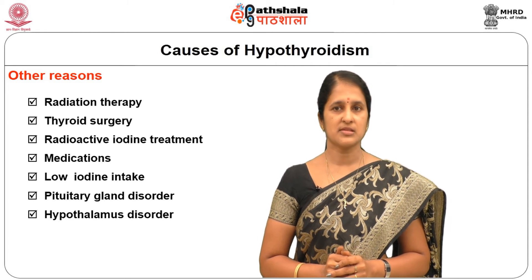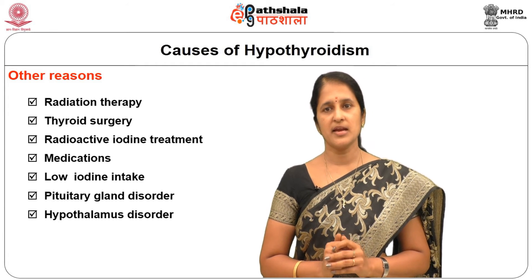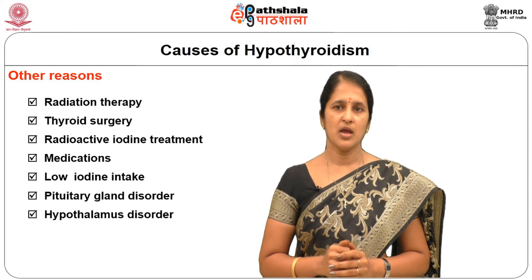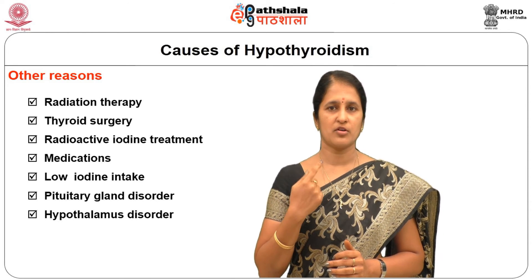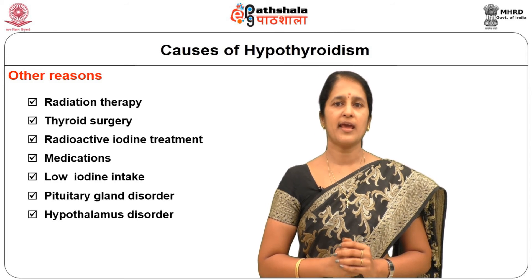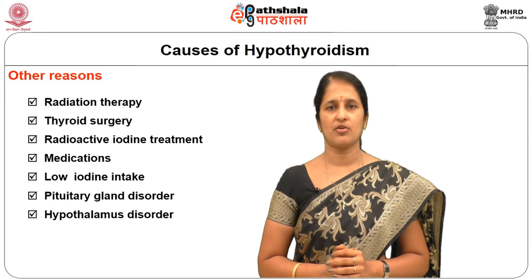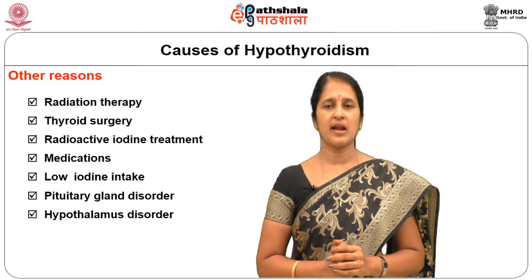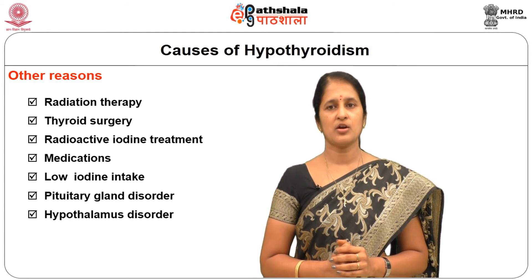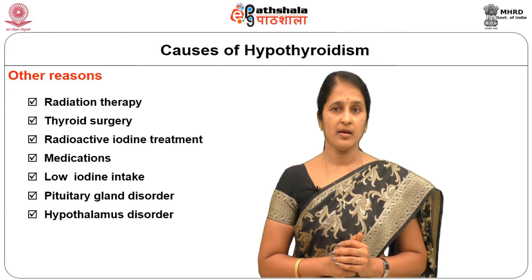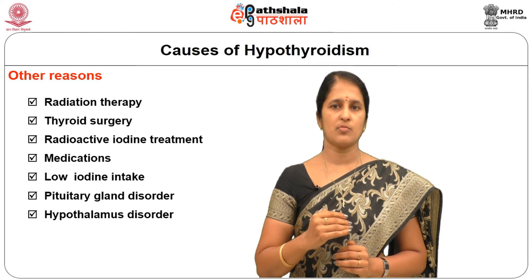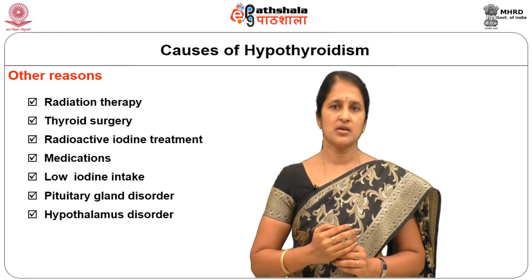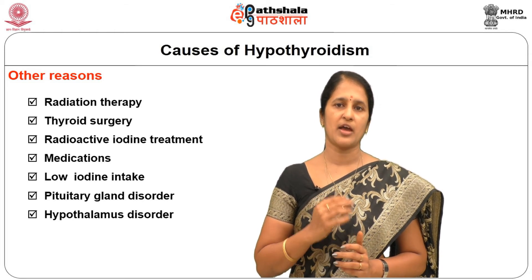For proper synthesis of thyroid hormone, iodine is needed sufficiently. Unfortunately, iodine is not produced in the body and must be taken through food sources. A good source of iodine is iodine-fortified salt. Low intake of dietary iodine also leads to hypothyroidism. Hypothyroidism due to pituitary gland disorder is very rare — if there is a problem in the pituitary gland, the production of TSH decreases, which ultimately decreases the synthesis of thyroid hormones.